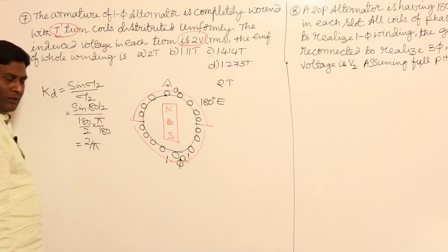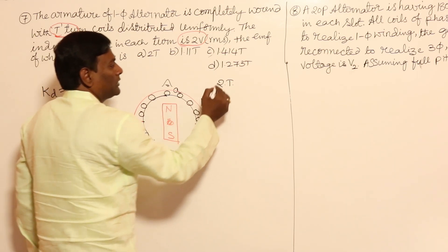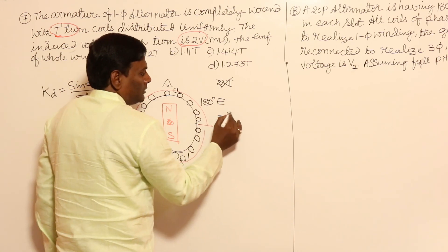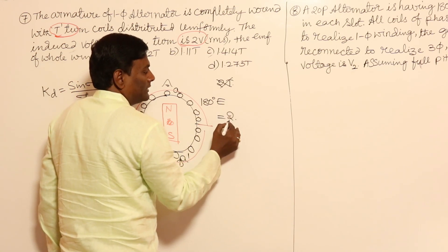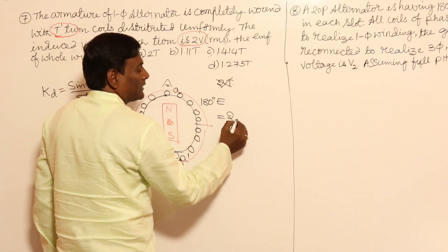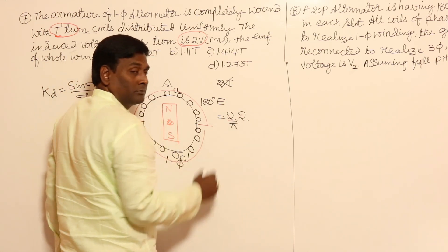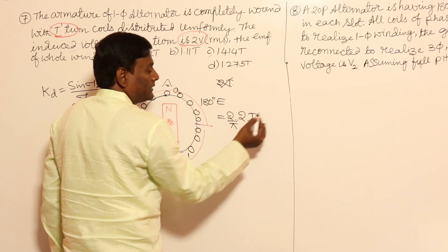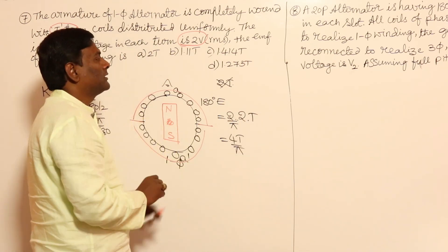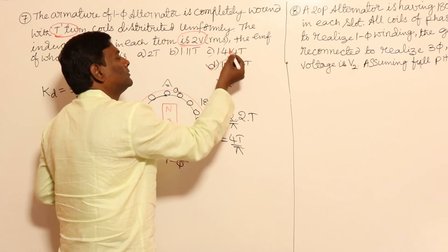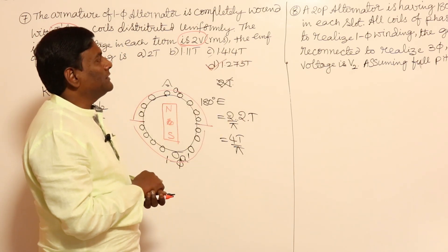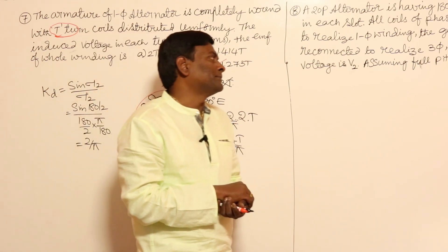This gives kd = 2/π. The total induced voltage is not simply 2t. The total induced voltage equals the distribution factor (2/π) times the per-turn voltage (2 volts) times the number of turns (t), giving 4t/π, which equals approximately 1.273t.